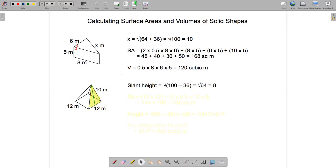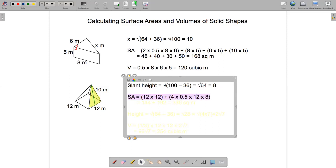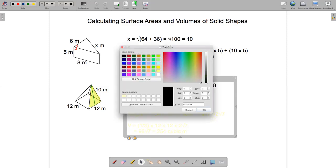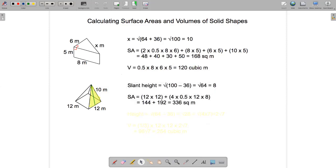So the total surface area, adding all those pieces together, will be 12 times 12 plus 4 times the areas of each triangle which is a half times 12 times 8. Add all that together and we get 336 square meters.